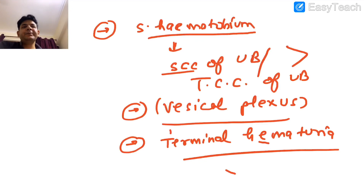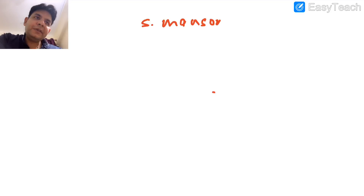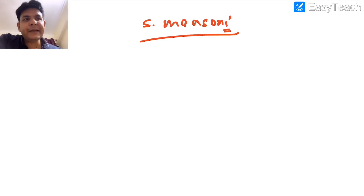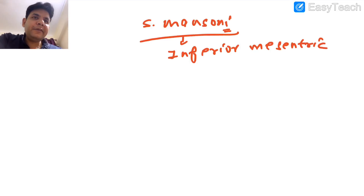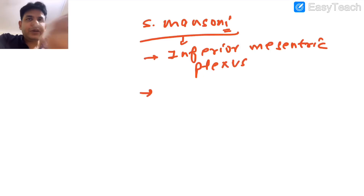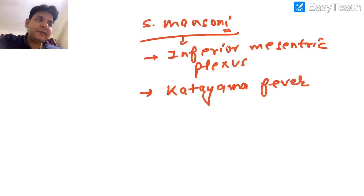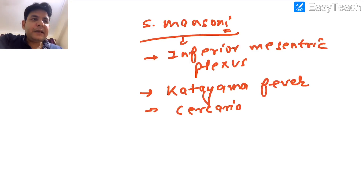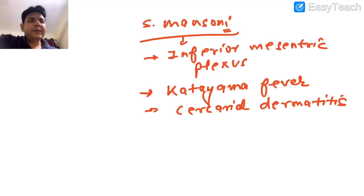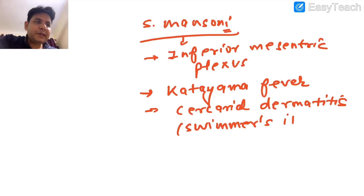Haematobium also leads to a unique entity called terminal hematuria. Schistosoma mansoni resides in the inferior mesenteric plexus. It leads to Katayama fever (serum sickness-like syndrome) and cercarial dermatitis, also termed swimmer's itch. The egg of mansoni has a lateral spine.